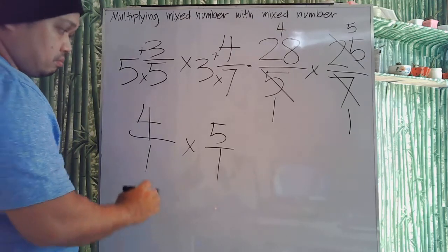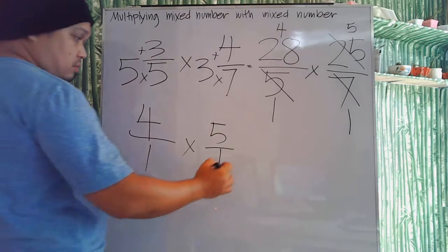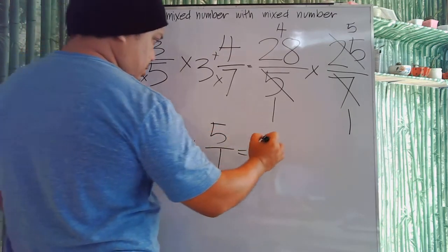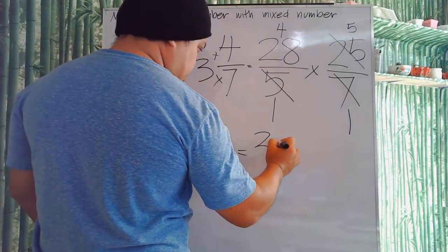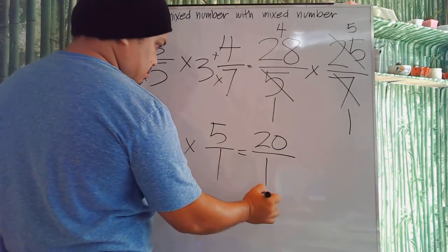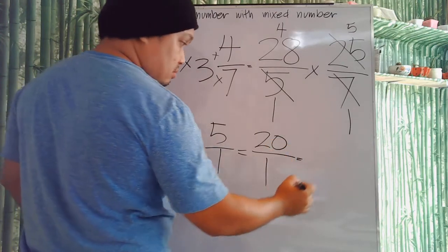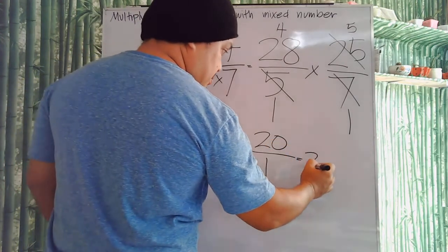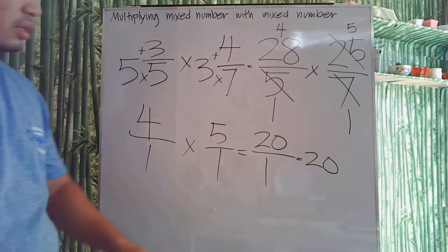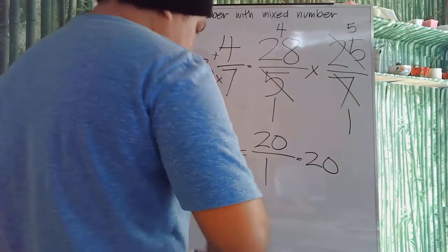Now we multiply: 4 times 5 is 20, and 1 times 1 is 1, so we have 20 over 1. Therefore, for our final answer, that's 20. Let's have one more example.